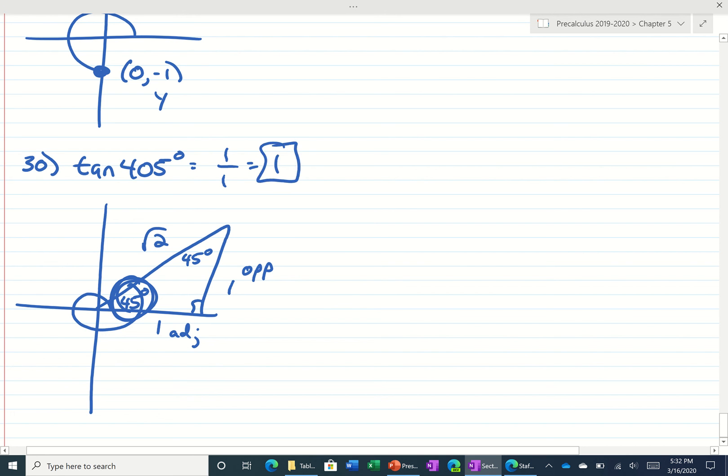I'll do one more. I'm seeing cosecant of 810 jumped out at me. That's number 21. So let's see, 90, 180, 270, 360, 450, 540, 630, 720, 810 is right here. The coordinates right there would be 0 comma 1. Sine of 810 would be the y value. So cosecant of 810 would be 1 over that value, or just 1.